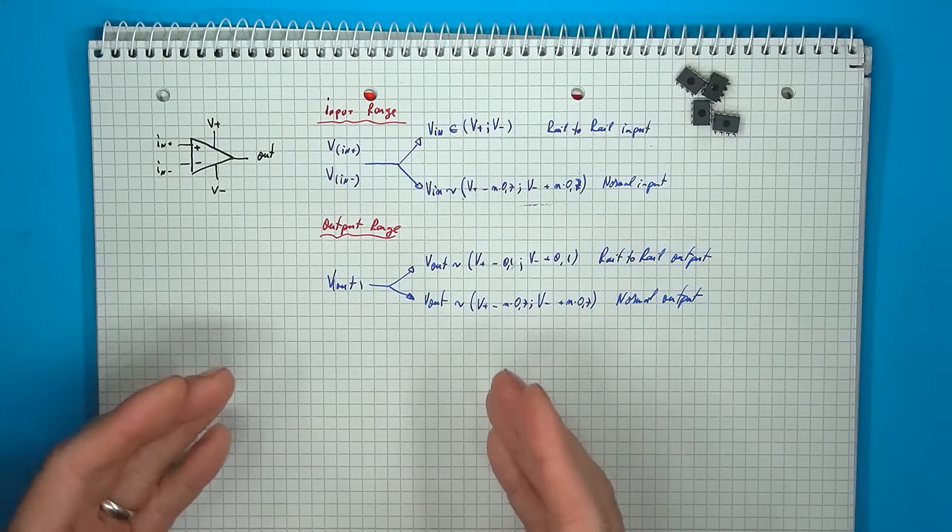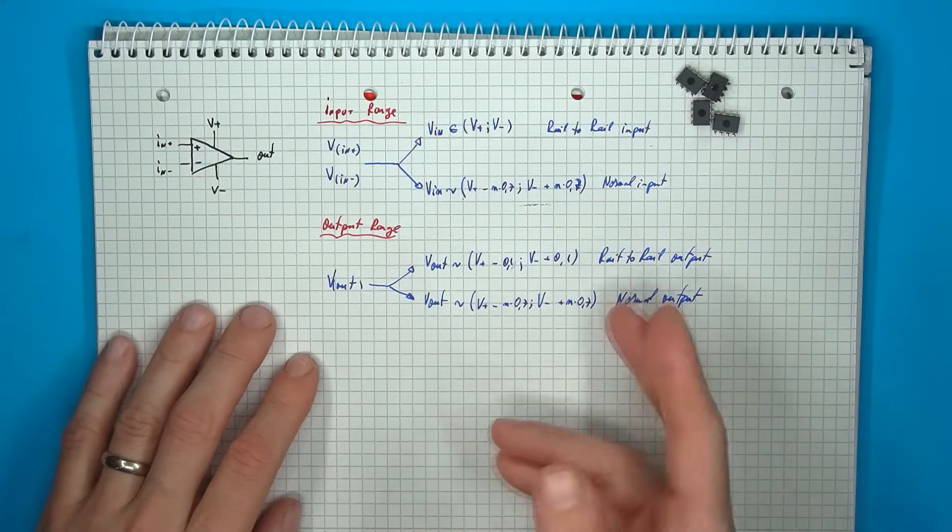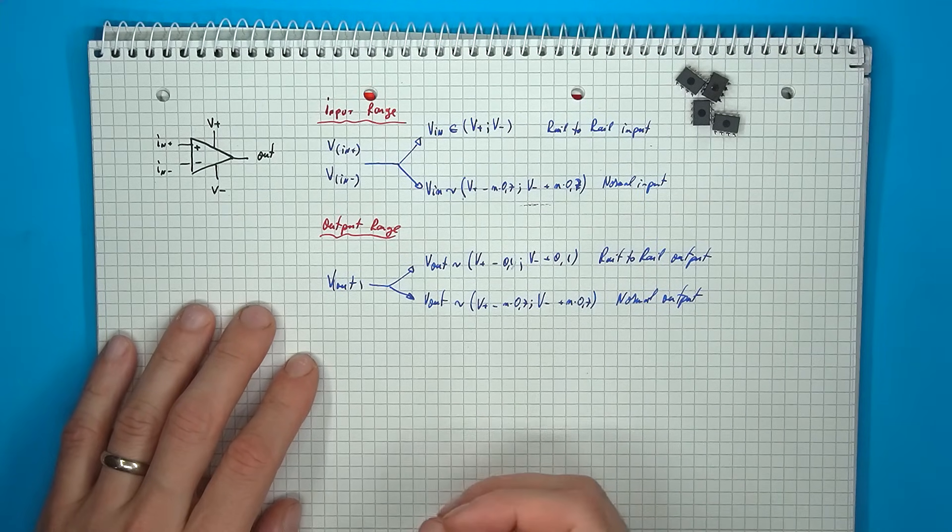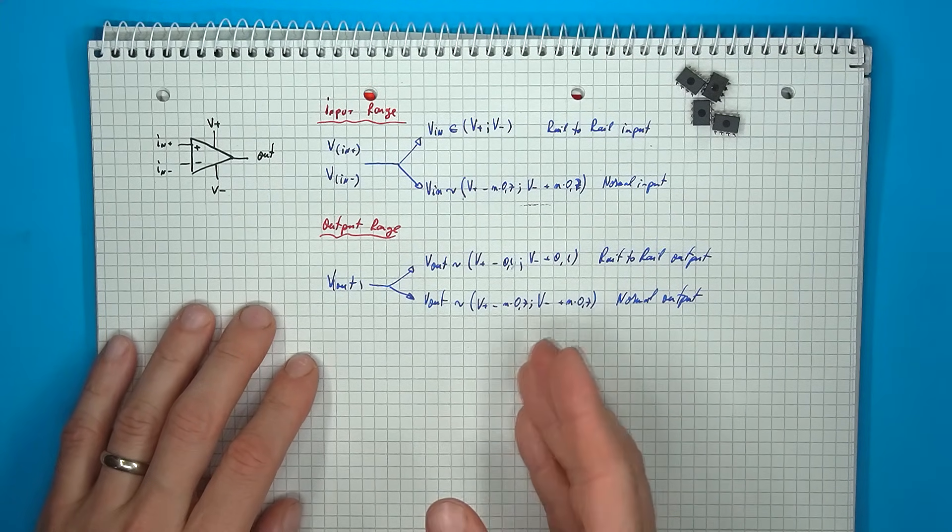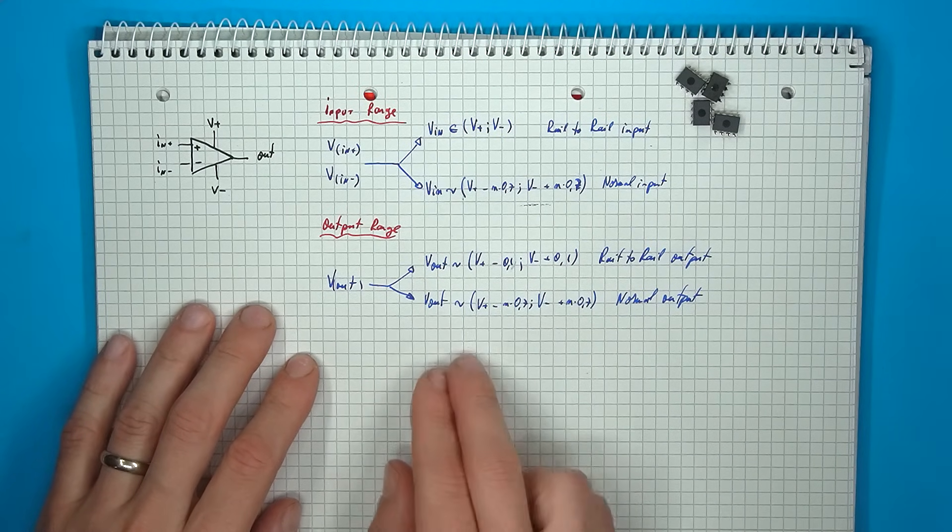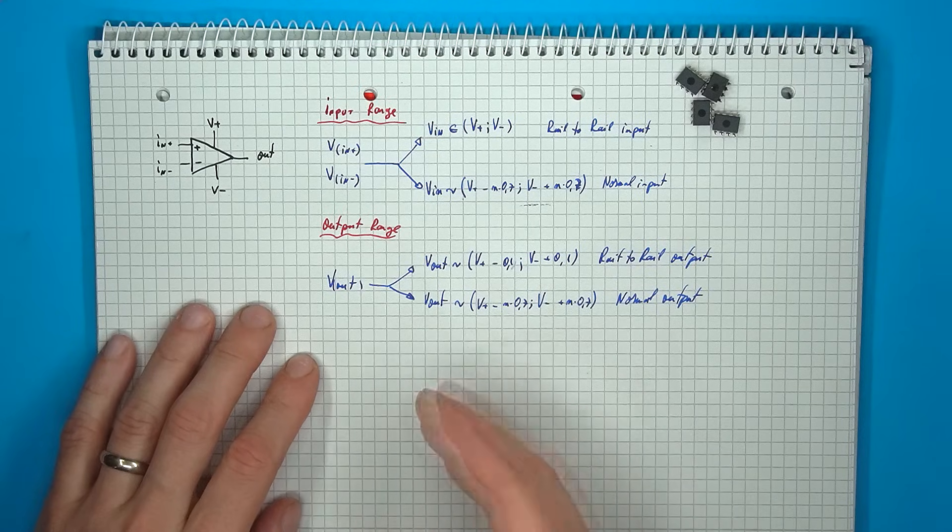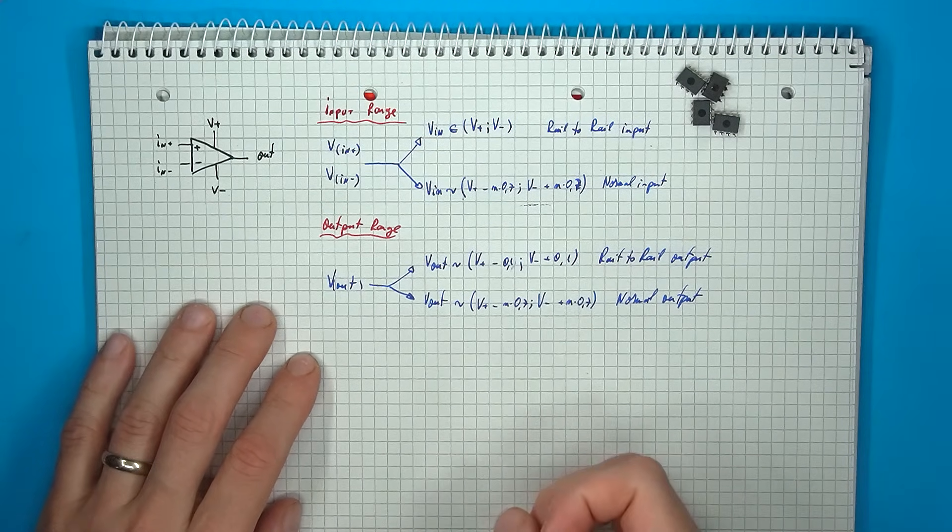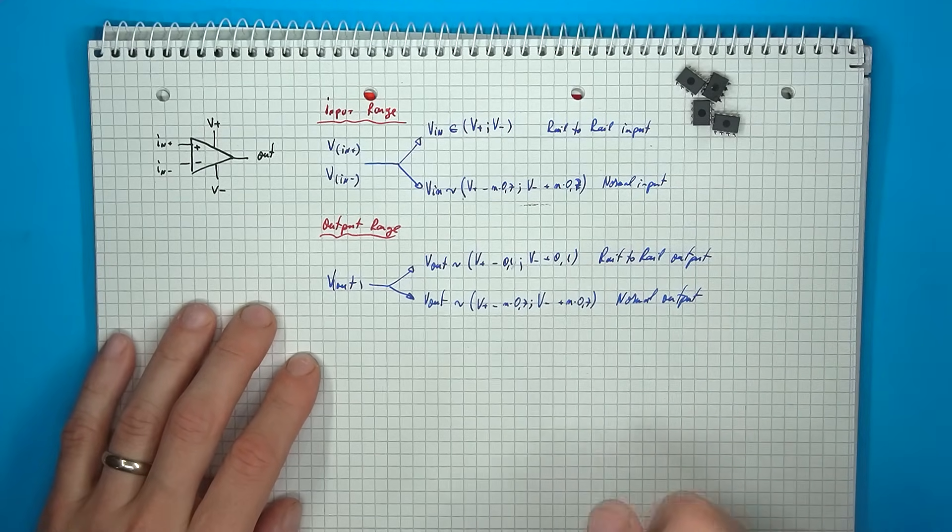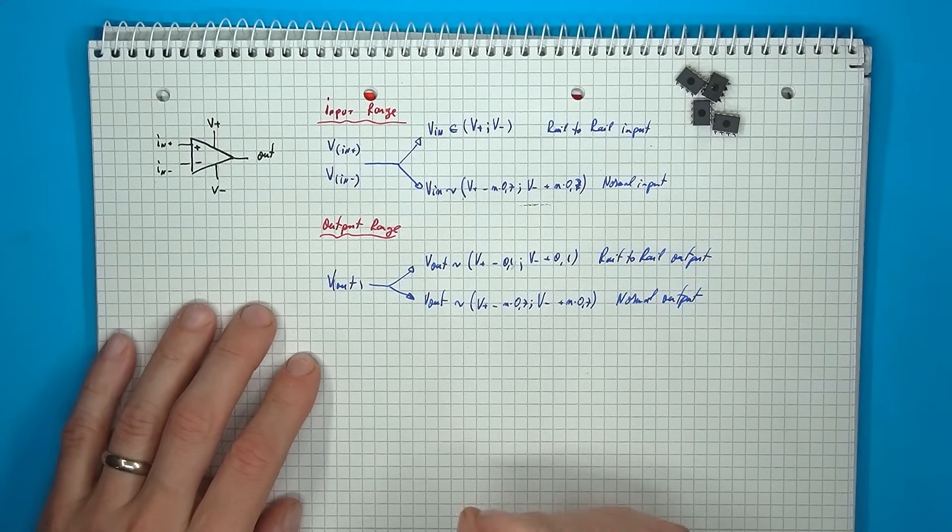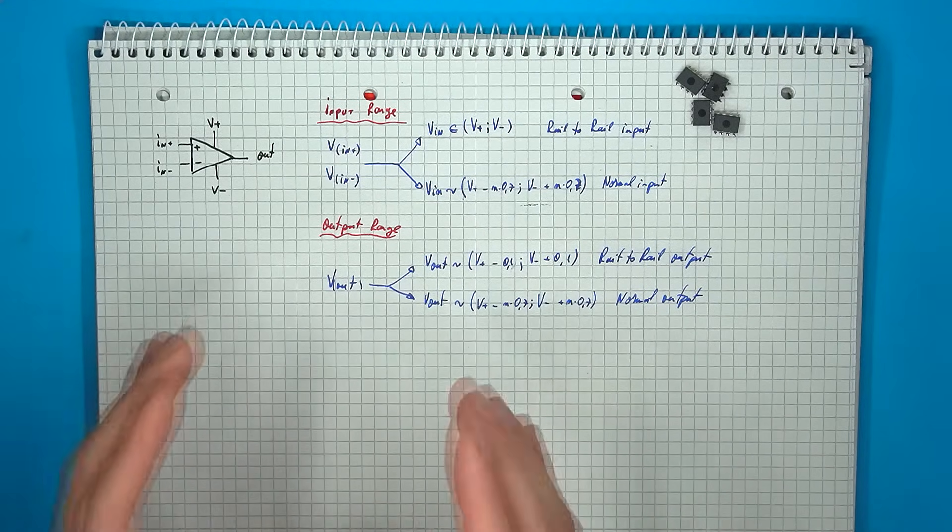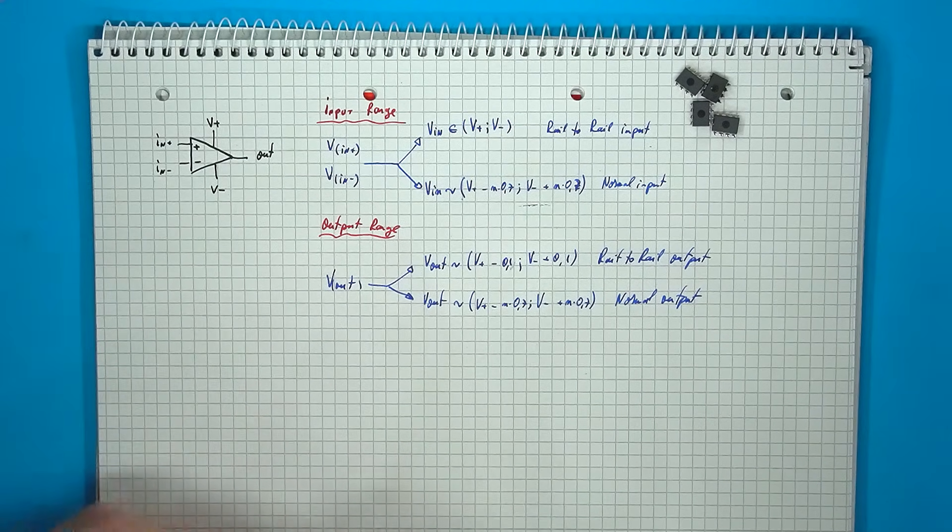A similar situation exists with the output. You have rail-to-rail output op-amps that have a very small limitation, so the output voltage range is usually the supply range minus some tiny value, so 0.1 or in that range, but with regular op-amps, you again get some multiple of 0.7. The exact voltage range, both for input and output, will of course be documented in the component's datasheet, but it's important to keep in mind that the active amplifier is usually limited in the amplitude of signals it can handle, both on the input and on the output.